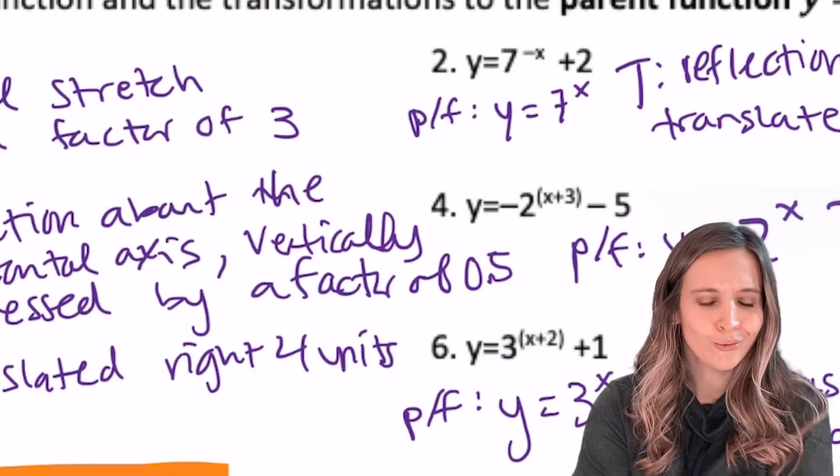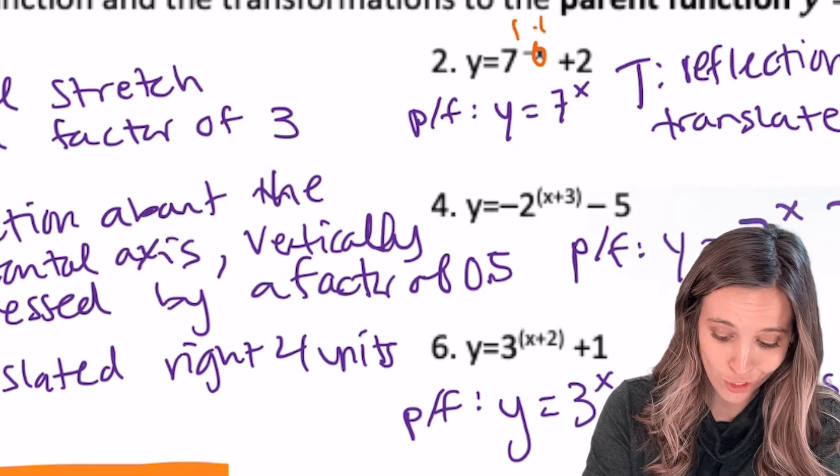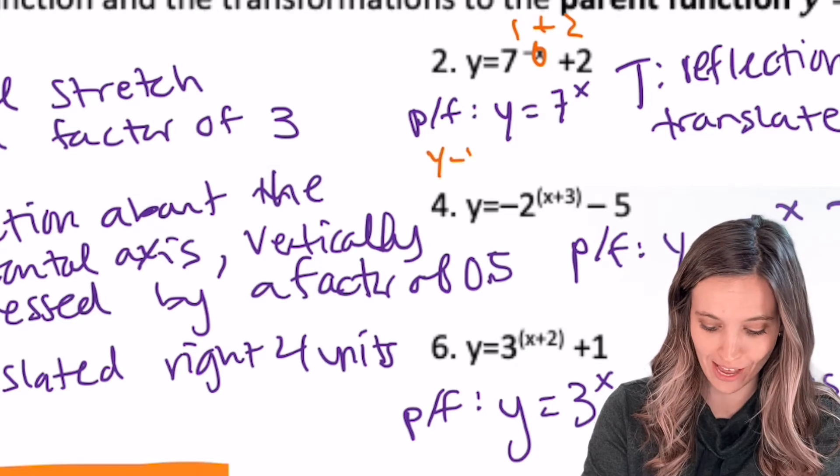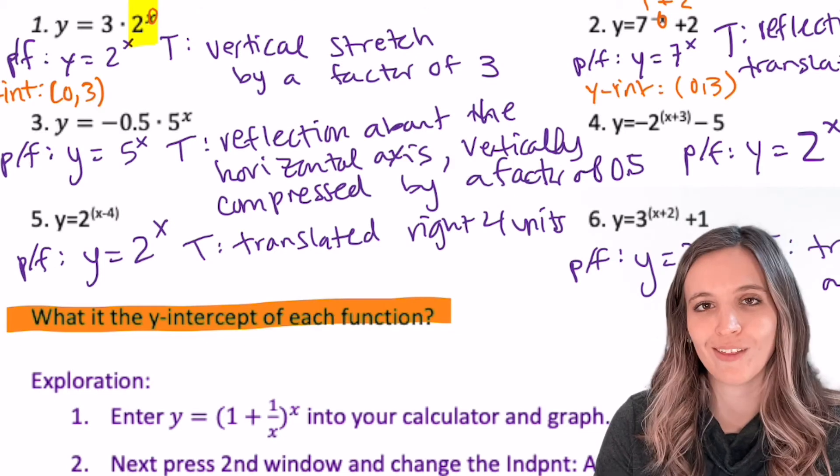Let's try number 2. Pop in that 0 for the x. 7 to the 0 is 1. 1 plus 2 is 3. Y-intercept is 0, 3. Getting the hang of this? Why don't you try the rest?